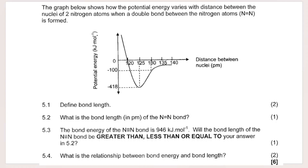Potential energy is on the y-axis, measured in kilojoules per mole. On the x-axis we have distance between nuclei in picometers. Picometers is a unit of measurement — tiny, like millimeters, nanometers, micrometers. To convert picometers to meters, you multiply by 10 to the power of negative 12.